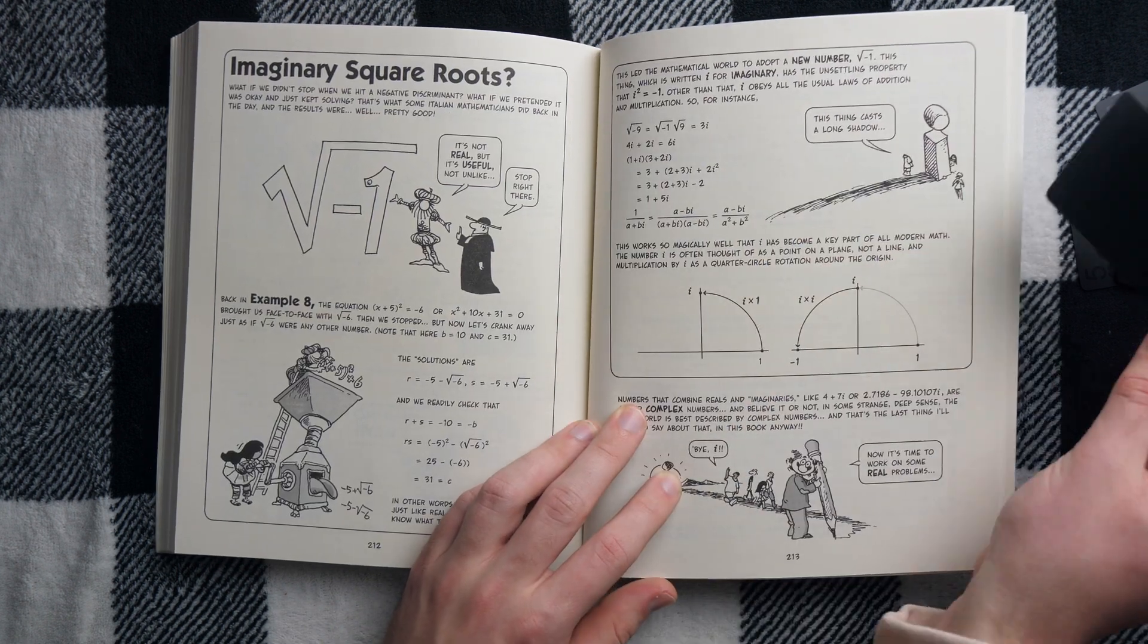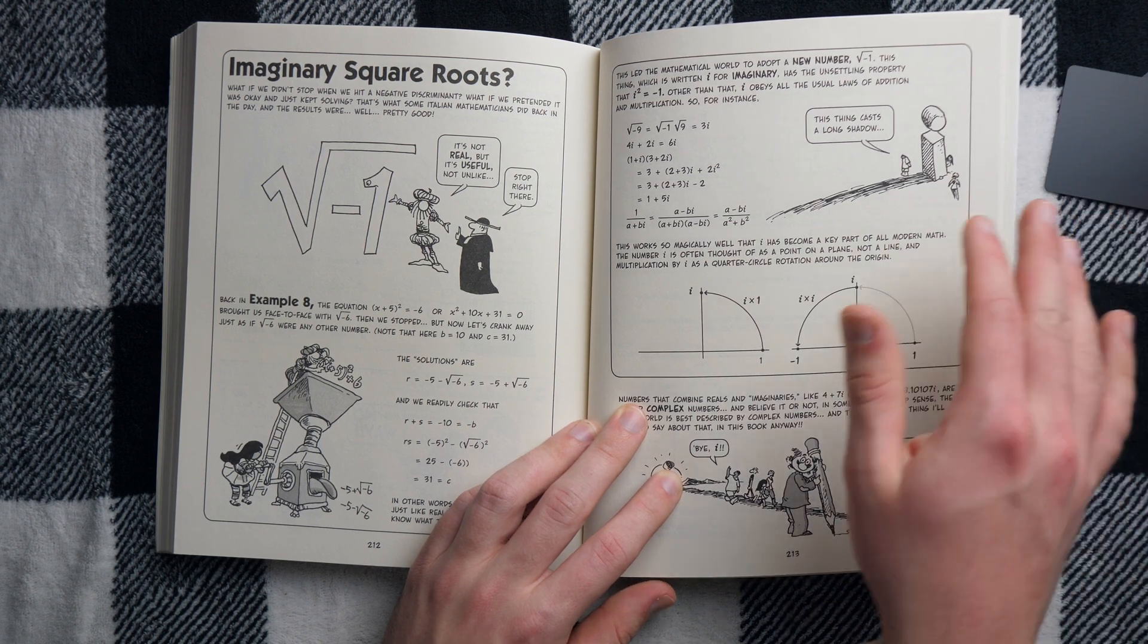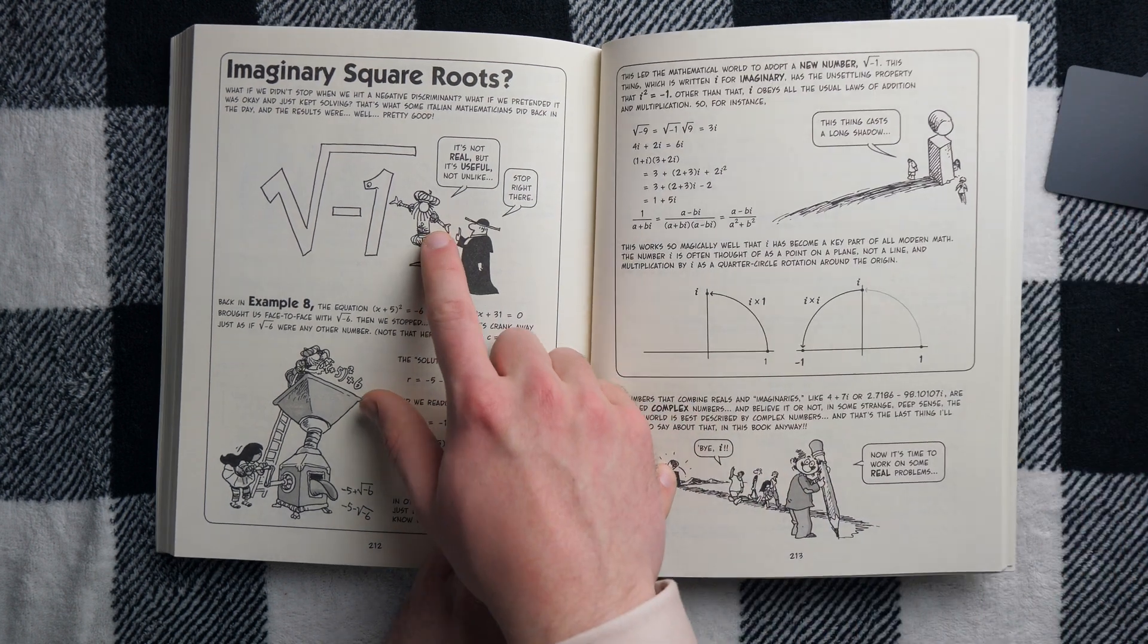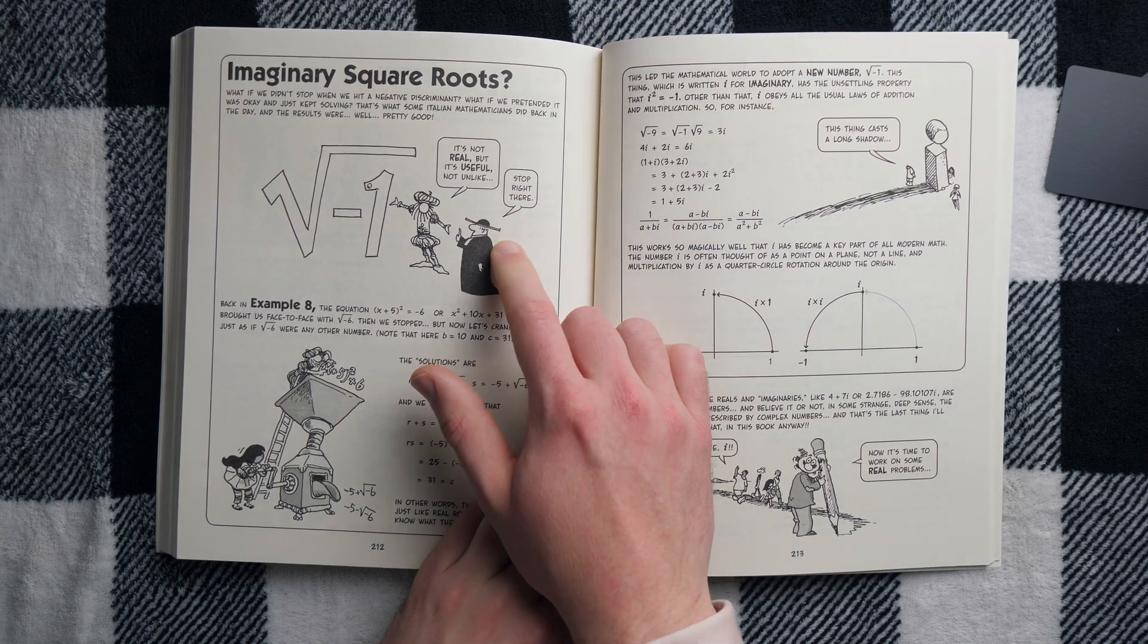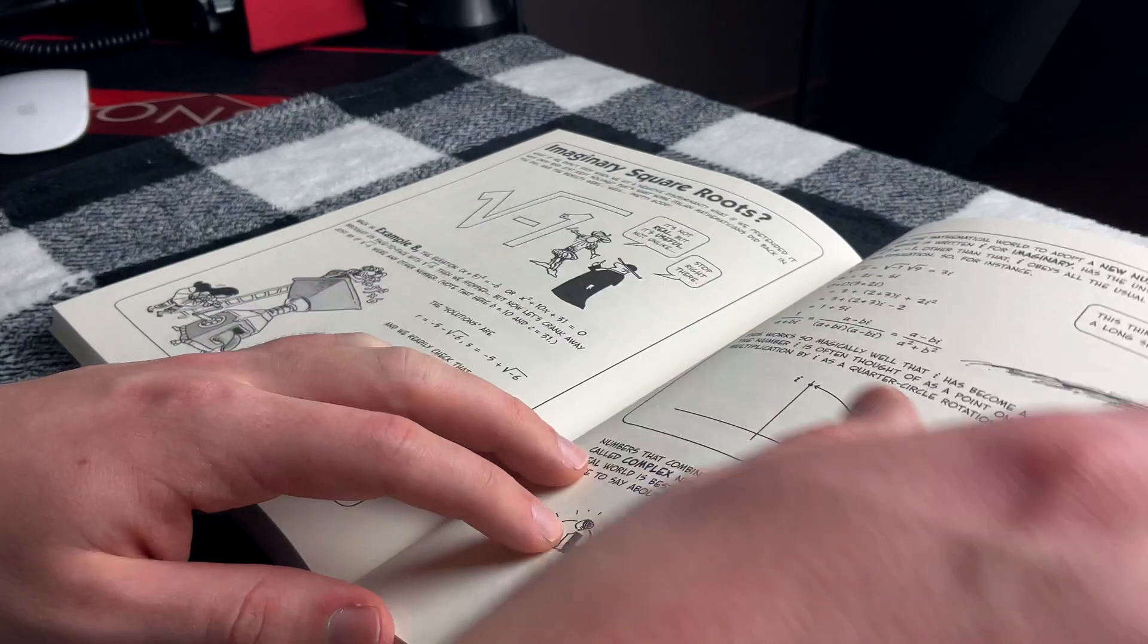They also introduce imaginary numbers before the book ends, which I think is really cool. This guy says it's not real, but it's useful. Not unlike, and then I don't know if this is supposed to be like a priest saying, stop right there. That's funny.